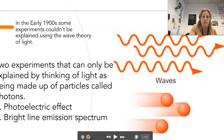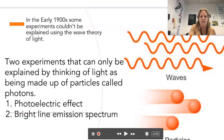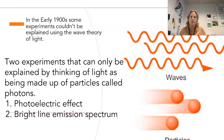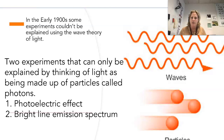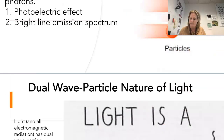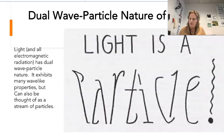But in the early 1900s, there were some experiments that were really impossible to explain if you think of light as only being a wave. Those two experiments are the photoelectric effect and the fact that we can see bright line emission spectra.